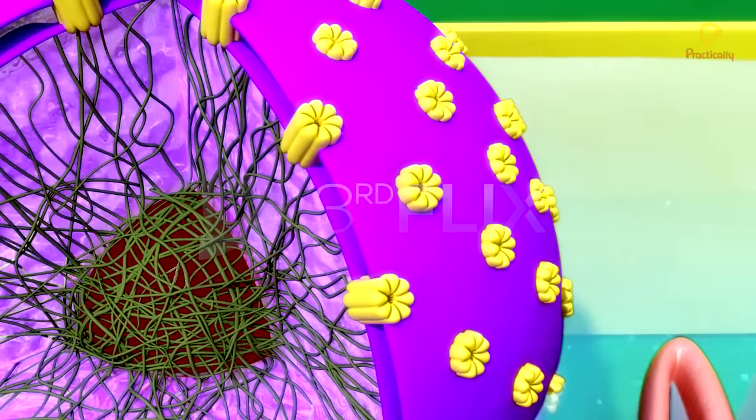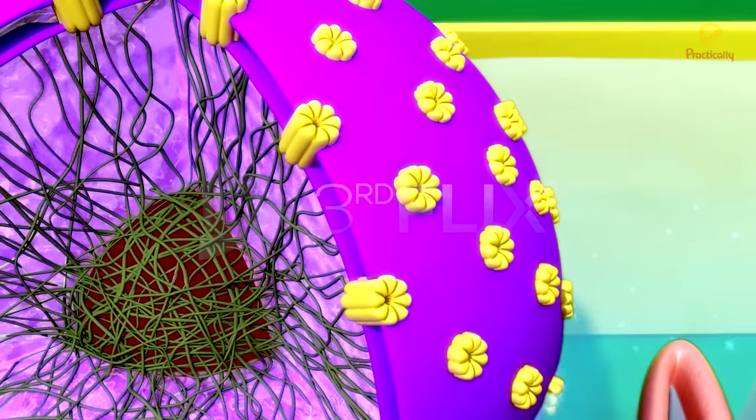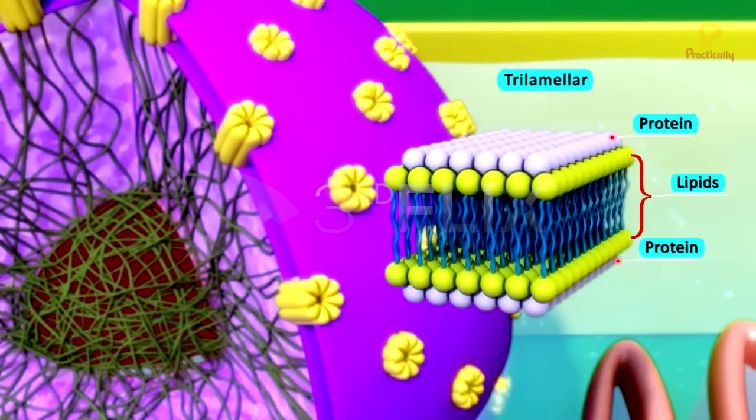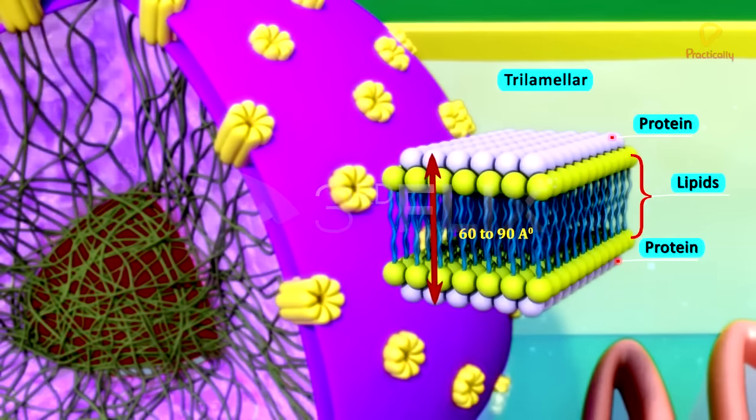Nuclear envelope is made up of two lipoproteinaceous trilamellar membranes. Each membrane is 60 to 90 angstroms thick.